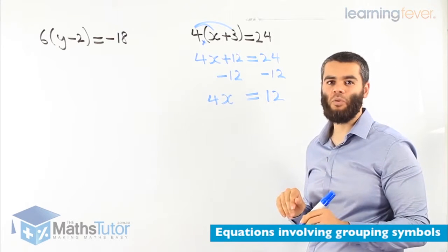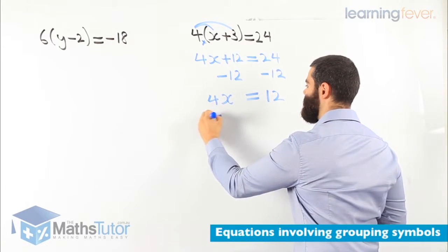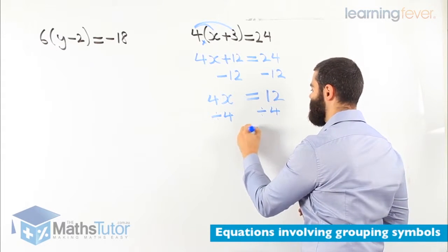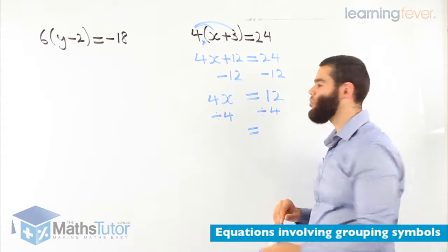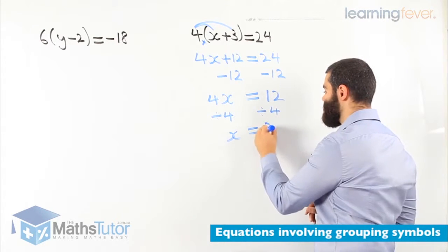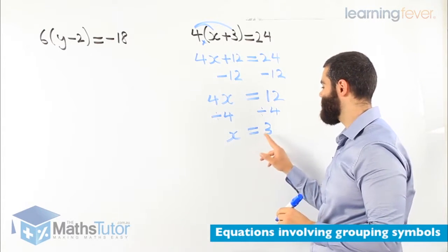4x equals to 12. Now, we divide by 4, and we divide by 4. 4 divided by 4 is 1, so 1x. And 12 divided by 4 is 3. Our answer is x equals to 3.